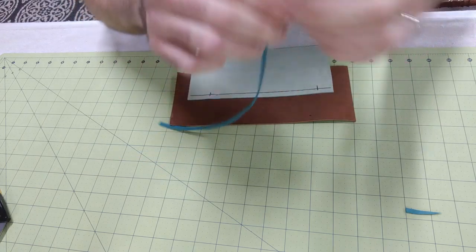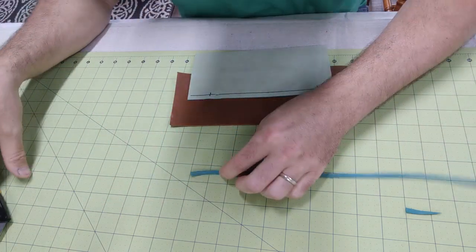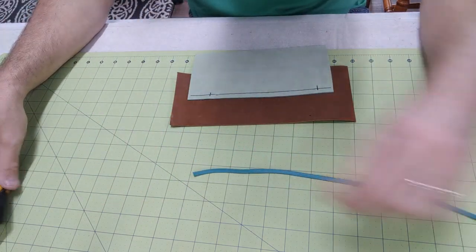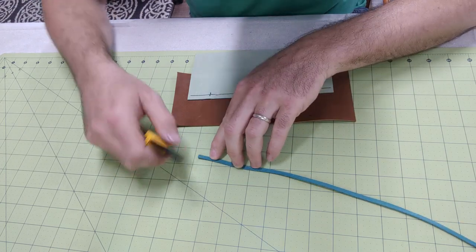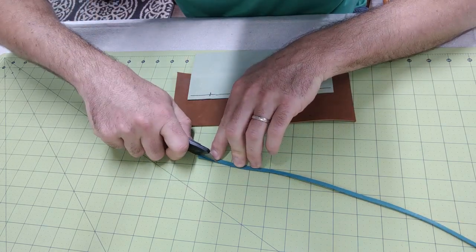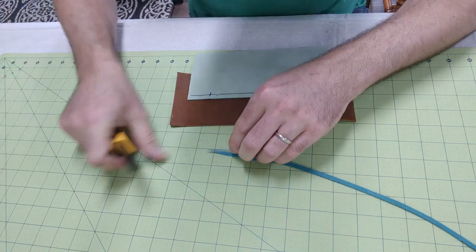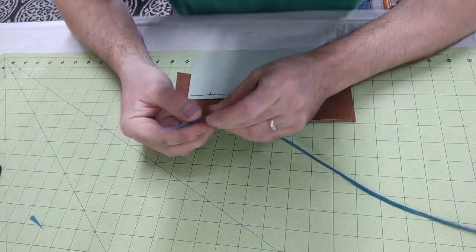If you've never buck stitched before you can follow along with what I do. There are many ways to buck stitch. This is just the easiest for me with the tools I have. On one end of the lace I'm going to cut an angle to create a point at one end.